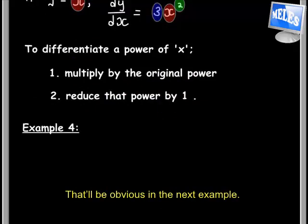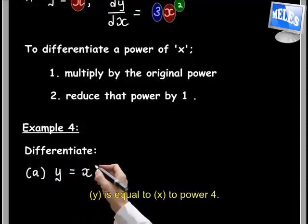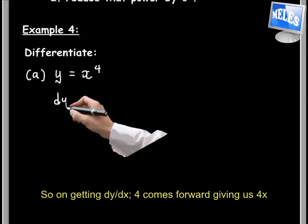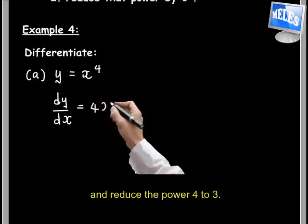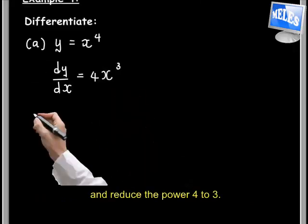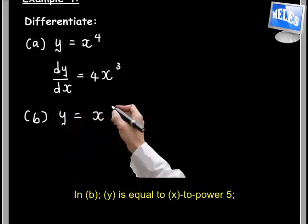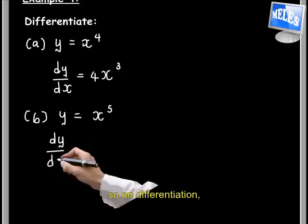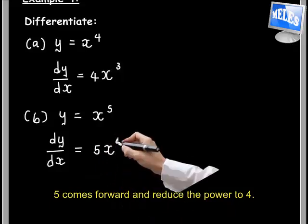That will be obvious in the next example. Here we are differentiating y equal to x to the power of 4. On getting dy/dx, 4 comes forward giving us 4x and we reduce that power of 4 to 3, giving 4x³. And for b, y is equal to x to the power of 5 — on differentiation, 5 comes forward and we reduce that power to 4, giving 5x⁴.